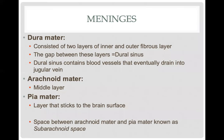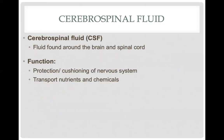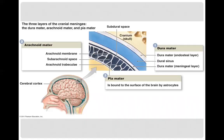The arachnoid mater is the middle layer shown here. The arachnoid mater has what we call a subarachnoid space, and that subarachnoid space is where cerebrospinal fluid flows. That gap is very close to your brain and is essential for providing buoyancy and a layer of fluid around the brain for protection.